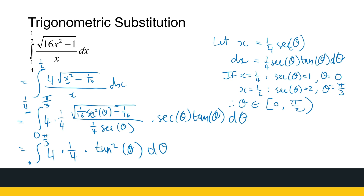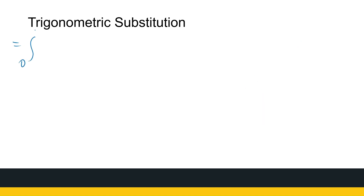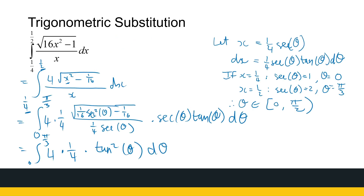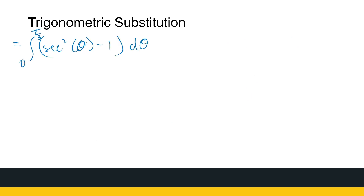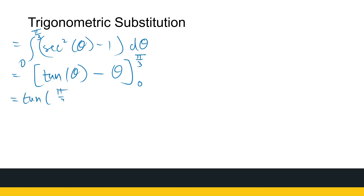That gives us the integral from 0 to pi over 3 of tan squared theta d theta. We don't have a shortcut for tan squared theta directly, but using the identity tan squared theta equals sec squared theta minus 1, we can integrate it as tan theta minus theta. Evaluating between 0 and pi over 3, we get tan(pi over 3) minus pi over 3 minus (tan 0 minus 0), which equals root 3 minus pi over 3. Definite integral with sec again, but because it was a definite integral, we didn't have to consider the two cases.